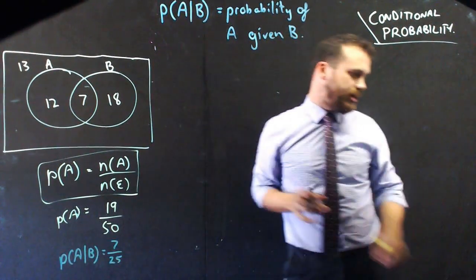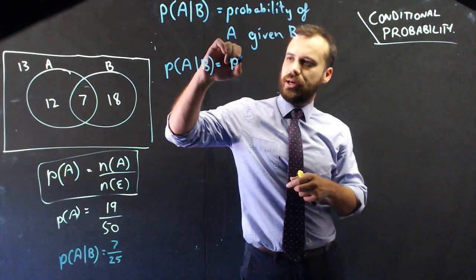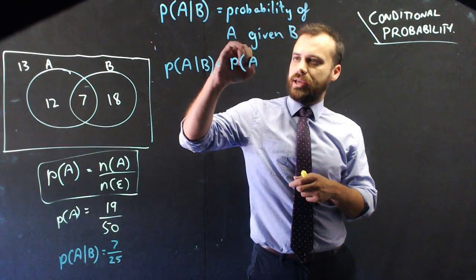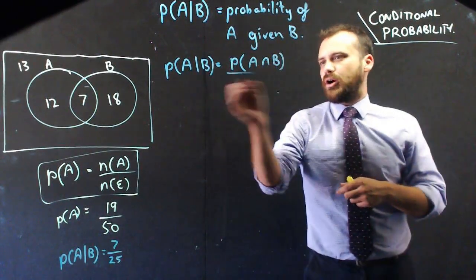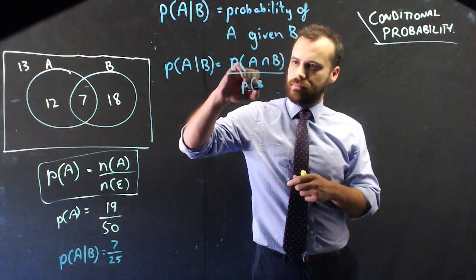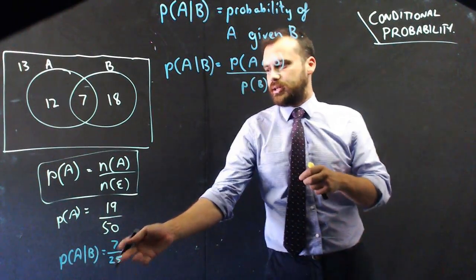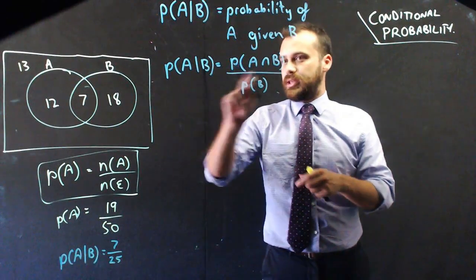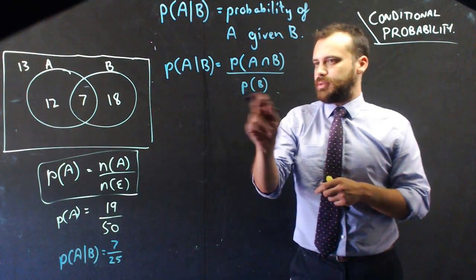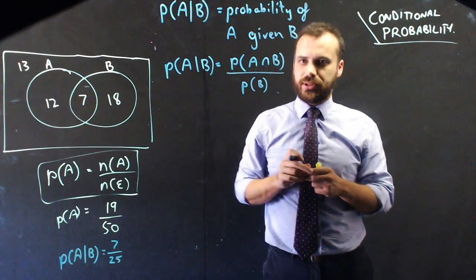The probability of A given B is going to be equal to the probability that they do both—the probability of A intersection B—over the probability that they're in B. So there's our conditional probability formula, and you can see it at work here. The probability that they're in both, A intersection B, was 7, and the probability that they're in B was 25. That's how our formula for conditional probability works.